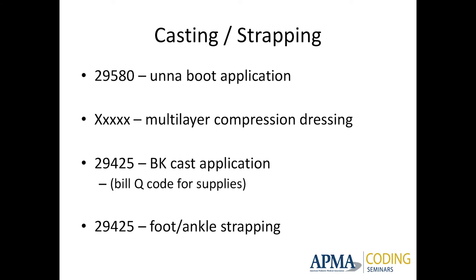Casting and strapping — 29580 is an Unna boot. 29581 is multi-layer compression dressing — whether from a commercial kit or applied yourself with multiple layers of compression. If you do an Unna boot with web roll and Coban on top, that's a multi-layer compression dressing; if you just put the Unna boot on and send them out, that's an Unna boot. Describe exactly what you're using for each layer and that you're applying it to give compression to the wound. You'd expect a diagnosis of swelling, edema, or inflammation — otherwise, why are you using compression?